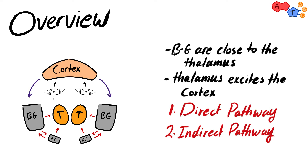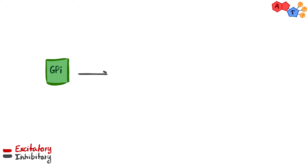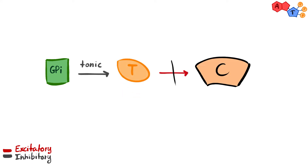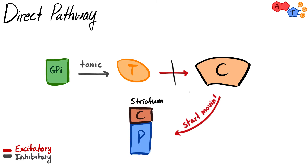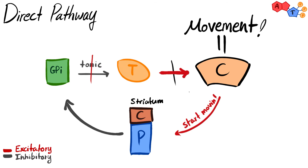These two pathways have opposite functions. At rest, the thalamus is tonically inhibited by the action of globus pallidus interna, with the help of substantia nigra pars reticulata. When you want to move, you activate the direct pathway: signals from the cerebral cortex activate the striatum, which inhibits globus pallidus interna, releasing the thalamus from inhibition so you can freely move.